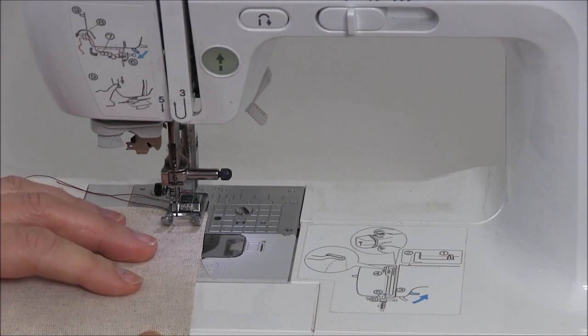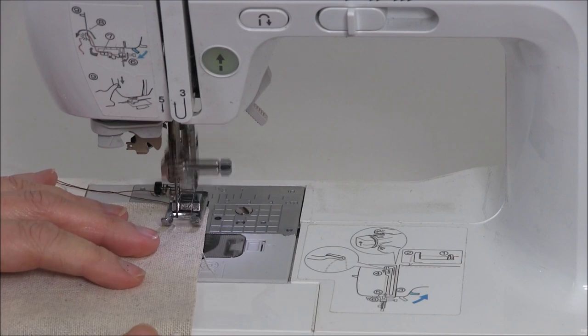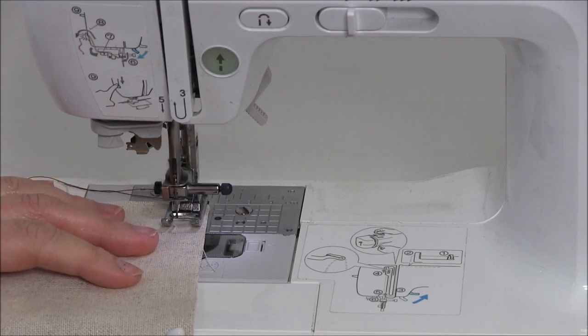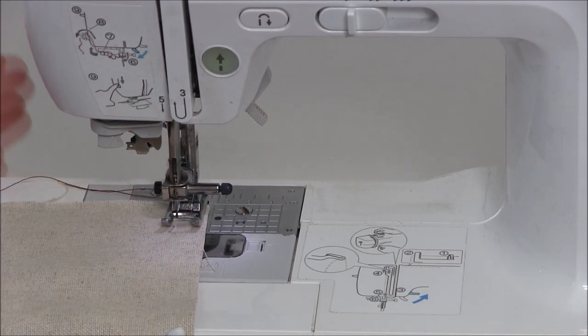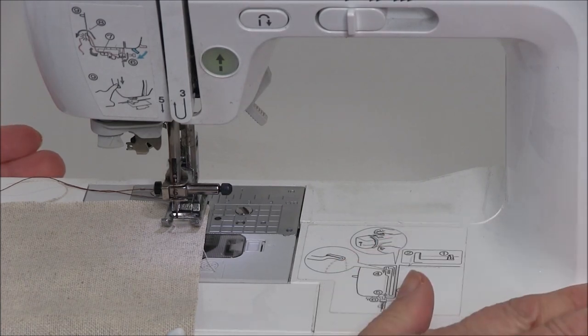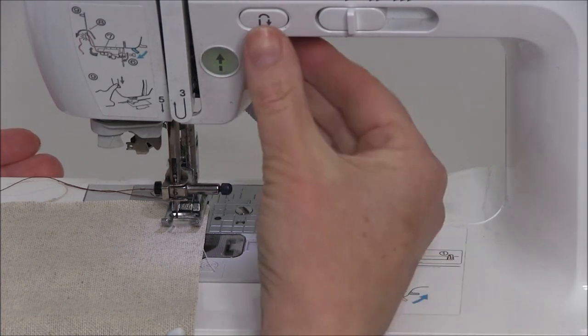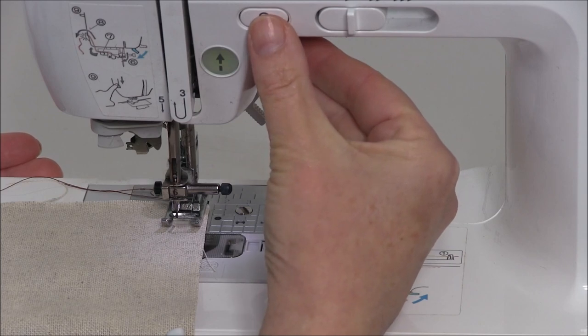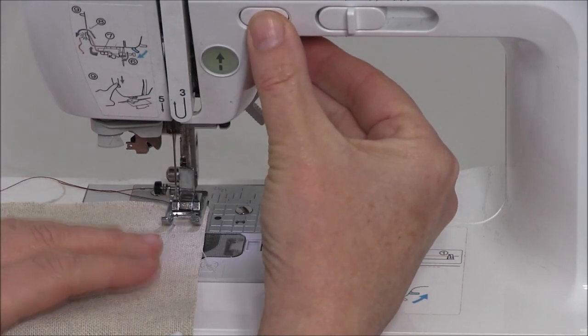You need to press down with your presser foot very gently and sew three stitches forward: one, two, three, and stop. Now we want to do our back tack. You will either push your lever down and hold it down. In my case, I'm going to hold the back button and stitch back three.